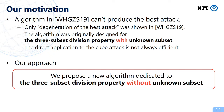The reason is that the algorithm at AsiaCrypt was originally designed for the three-subset division property with unknown subset — its supposed application is block ciphers. The direct application to cube attack is not always efficient, and eventually this algorithm can't recover the superpoly of Trivium with the best attack.